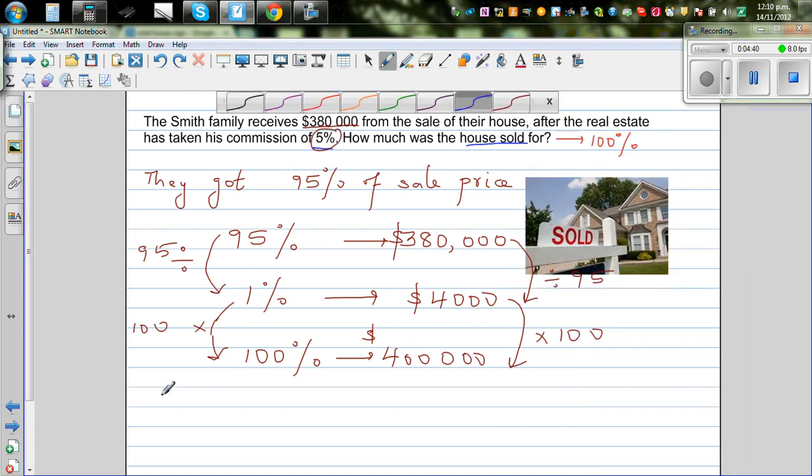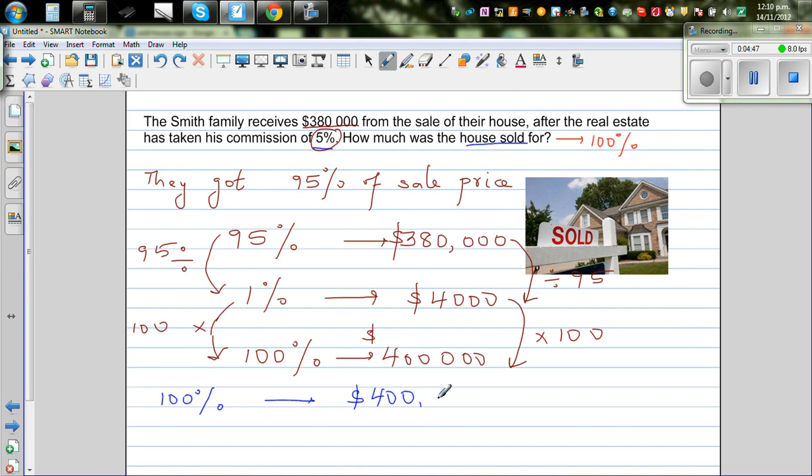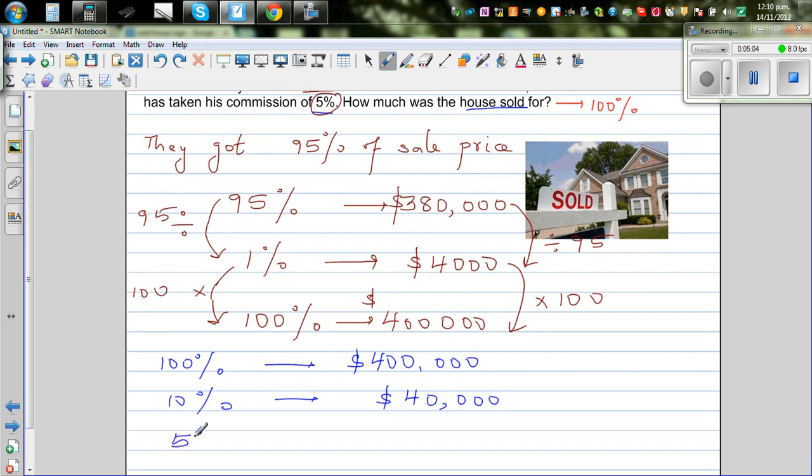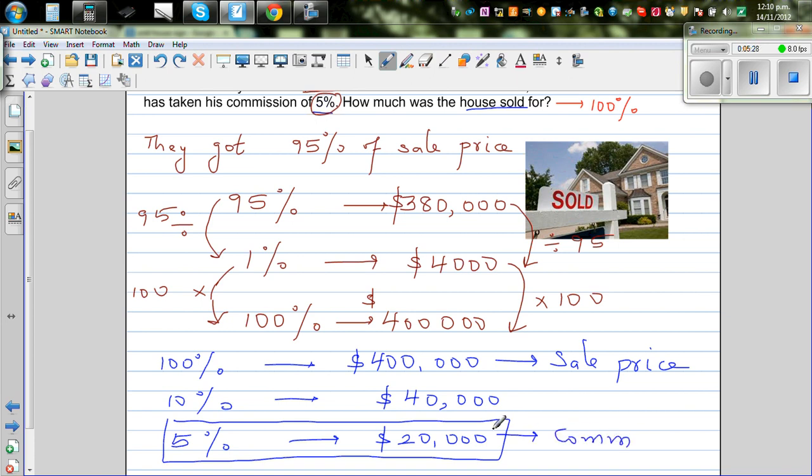Now how can you check your answer? So 100% is 400,000. So how much would be 10%? 10% would be 40,000. So if you want 5%, 5% is 20,000. Does it make sense? So the house was originally sold for, this is the sale price, 400,000. And this is the commission that the agent got, which is 20,000. And you can check: 400,000 take away 20,000 is 380,000.